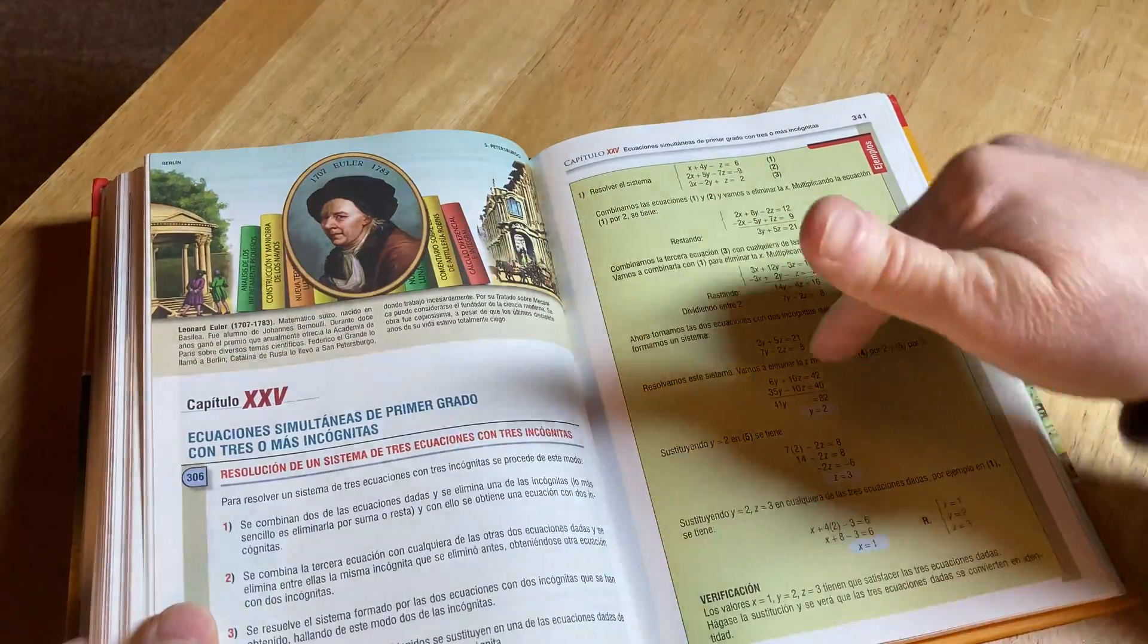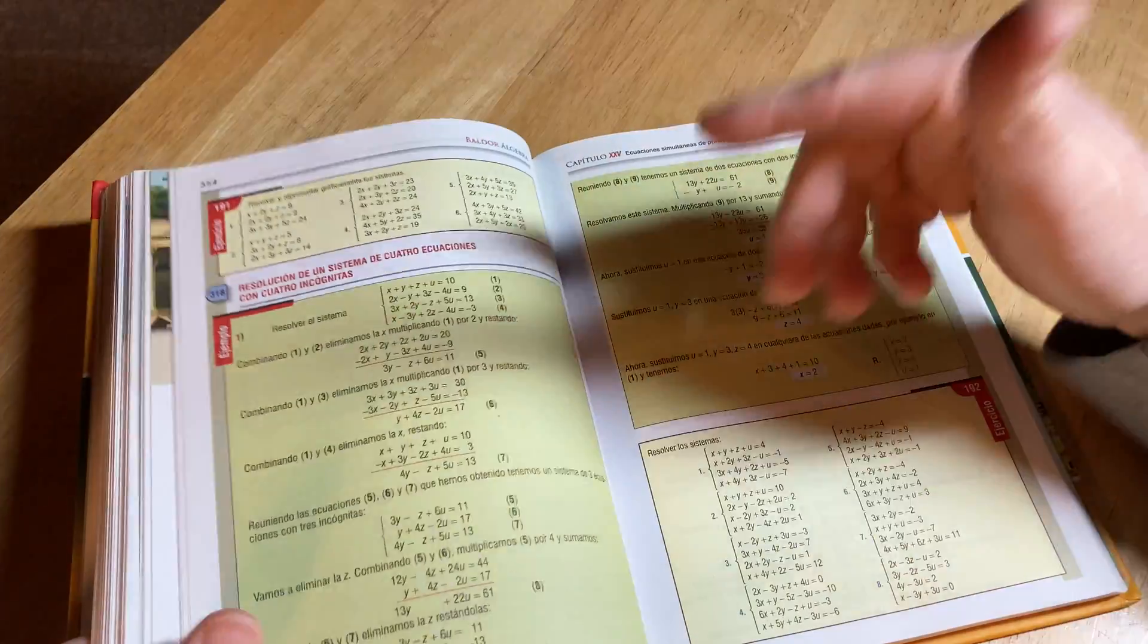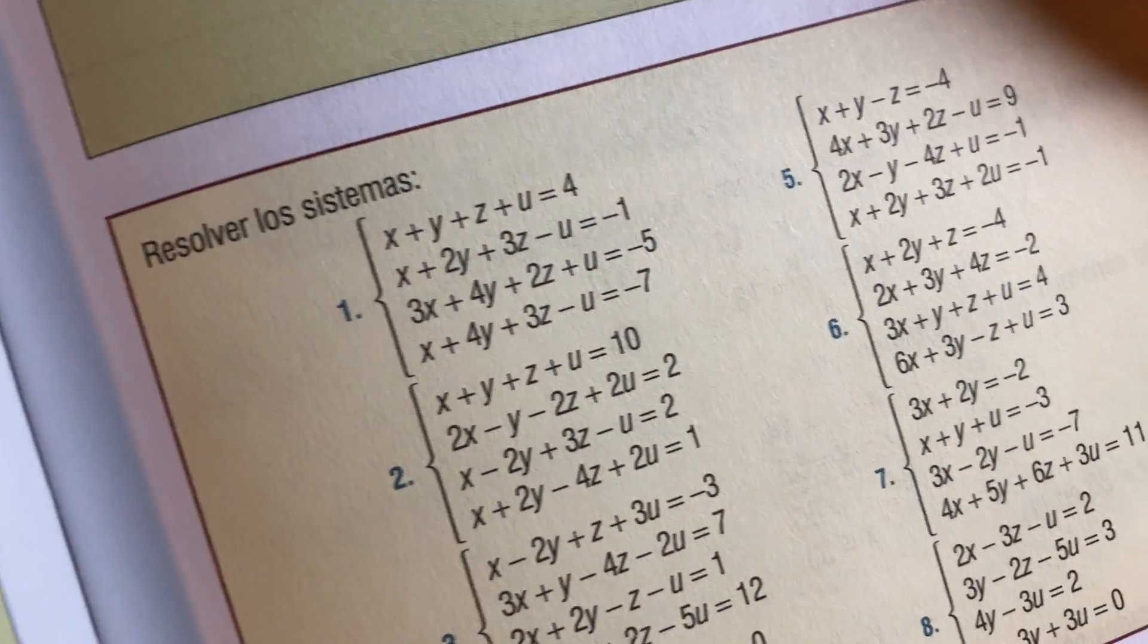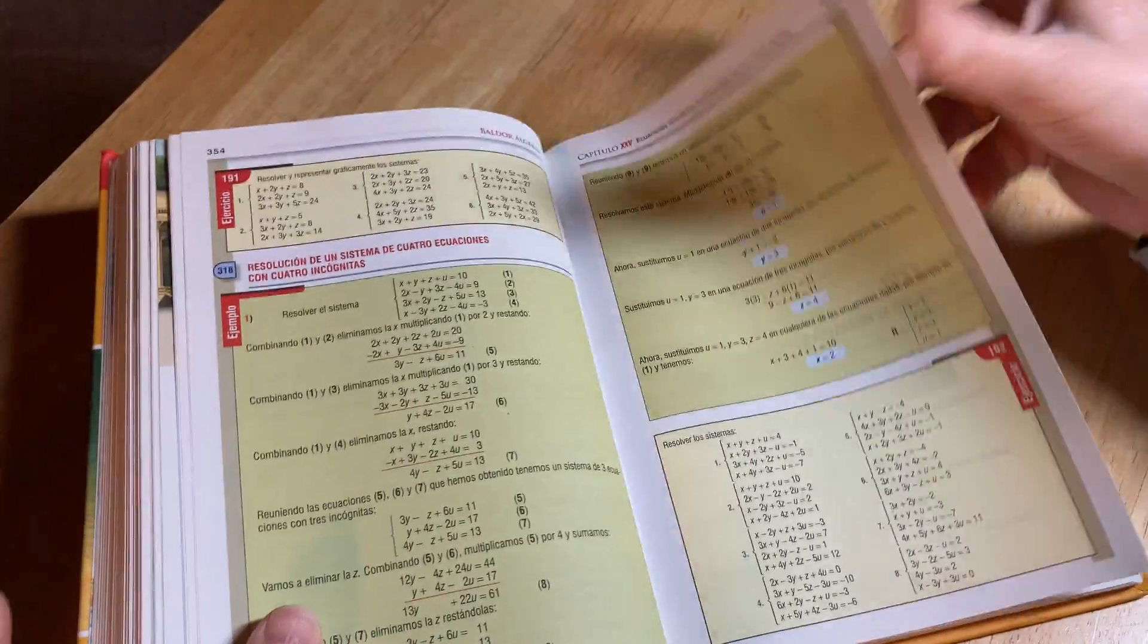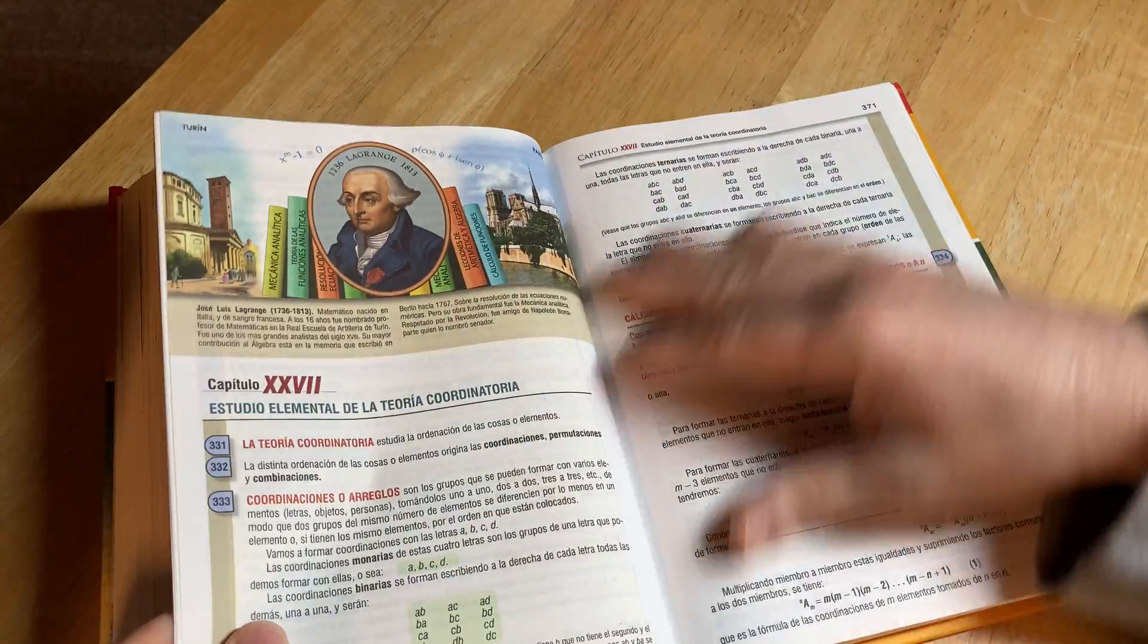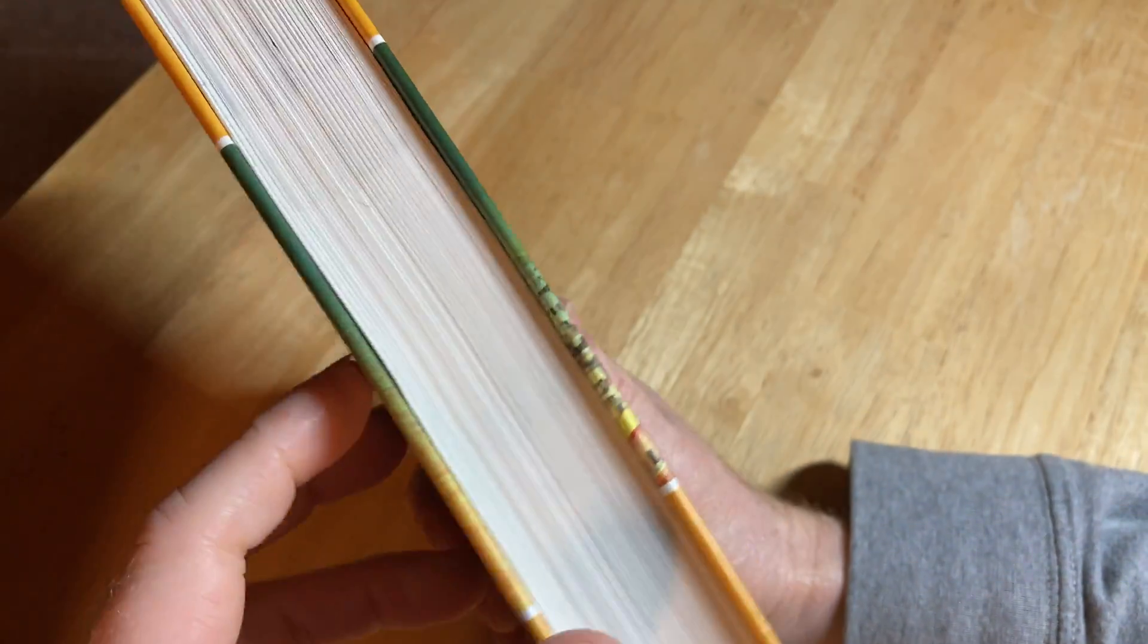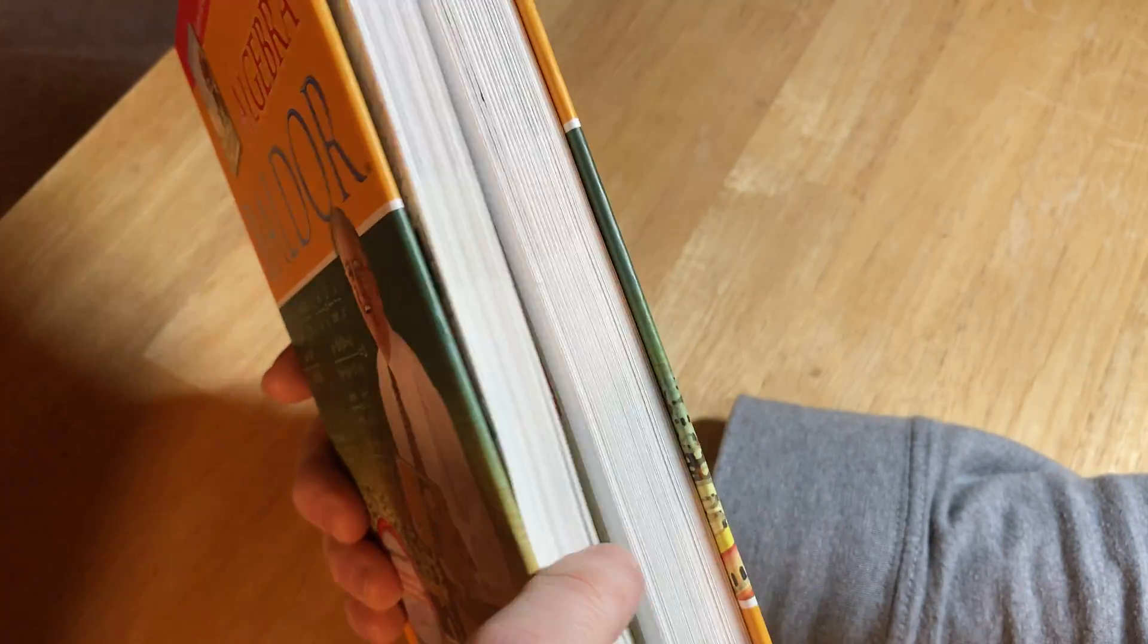But I wanted to get one. And so I made the sacrifice and I got this one because this is the algebra one. Look at these systems of equations, four equations, four variables. No joke. Baldor. Really good source of math problems.